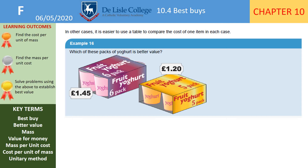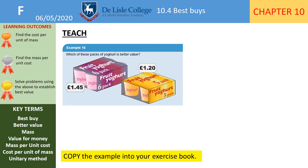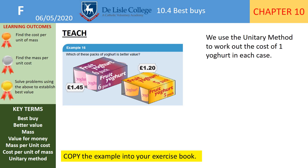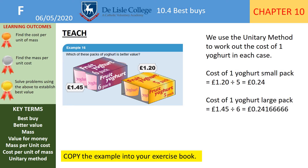Example 16: which of these yoghurts is better value? You might want to pause and have a go. Working out the cost of one yoghurt: in the small pack it's £1.20 divided by 5 = 24p. In the 6-pack it's £1.45 divided by 6 = 0.2417p recurring — slightly more than 24p. The small pack is slightly better value. If in an exam you said they were basically the same cost at 24p each, that would be perfectly acceptable.